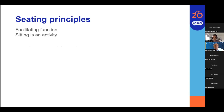Looking at some seating principles: seating is there to facilitate function, and we really should consider sitting as an activity. Textbooks tend to show people sitting in 90-90-90 positions, but that's not a normal position. We really need to think about what activity the person is trying to achieve and make sure they can move into that position to achieve it.